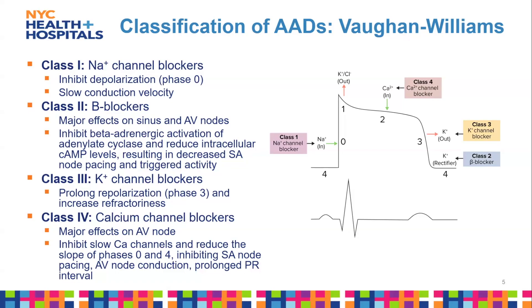Beta blockers reduce intracellular cyclic AMP, resulting in decreased SA node pacing and triggered activity. Class 3 potassium channel blockers prolong the repolarization phase and increase refractoriness — the phase where calcium influx stops and potassium efflux increases. Class 4 calcium channel blockers act on the AV node, slow calcium channels, inhibit SA and AV node conduction, and prolong the PR interval.